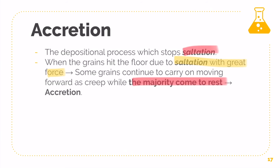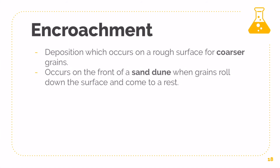Encroachment is basically the main deposition process responsible for the formation of sand dunes, which we'll learn in part 4. The reason why sand dunes are formed is because deposition occurs on a rough surface — whenever you are referring to a rough surface, the deposition process behind it is usually encroachment. Simply put, it's just when your coarser grains get deposited on a rough surface. For instance, if you've got a rough windward side of a sand dune, as the wind transports sediments and they hit this windward side and hit the coarse grains, the coarse grains may get released due to friction and weight — that is the process of encroachment.